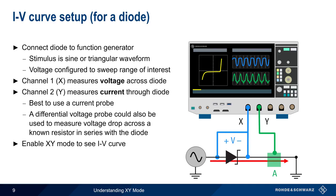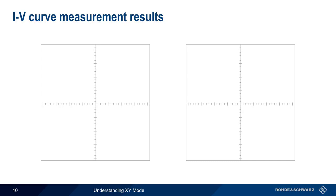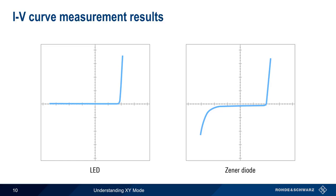Let's look at a couple of examples of IV curves created in XY mode. A standard LED, or light-emitting diode, will usually have this type of trace, with the turn-on voltage being partly a function of the color of the LED. And as we've looked at already, a Zener diode will have both a forward turn-on voltage and a reverse breakdown voltage. Note that in these examples, the length of the trace depends on the voltage range the function generator sweeps across.